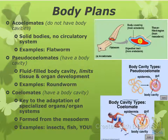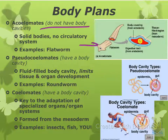So there are also three types of body plans. You have acoelomate, pseudocoelomate, and coelomate. Acoelomates do not have a body cavity — solid bodies, no circulatory system, like a flatworm. If you look at a flatworm, it has a tissue-filled region, a digestive tract, and a body covering, and that's it — very, very simple systems.